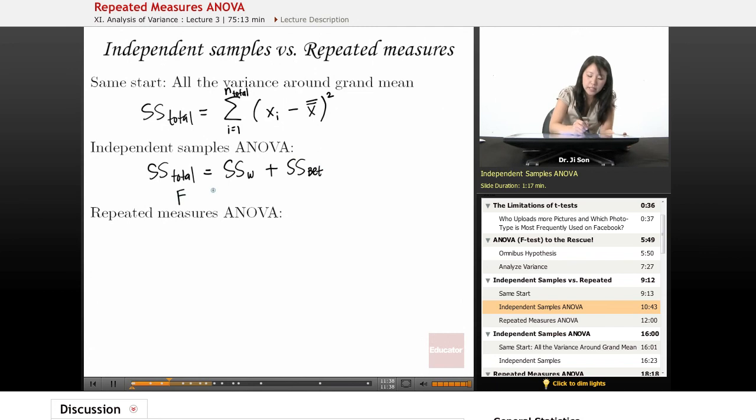And because of that, the F statistic here becomes the variability, I'm sorry, the variance between, over the variance within. And obviously each of these variances correspond to its own sum of squares.